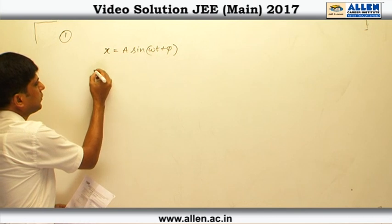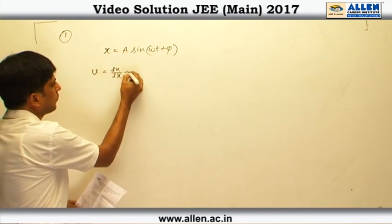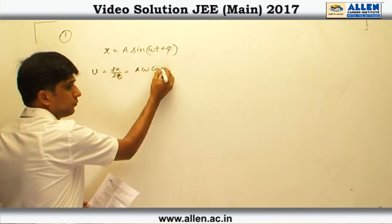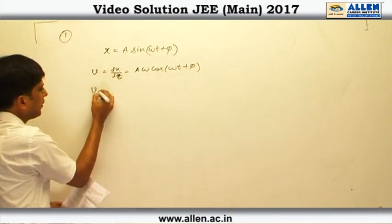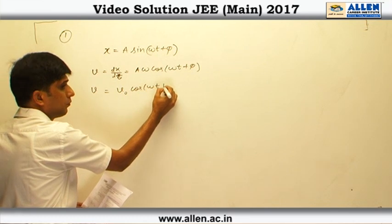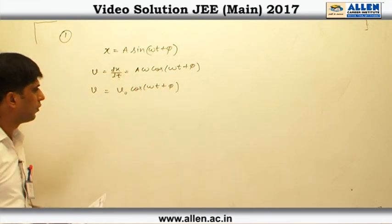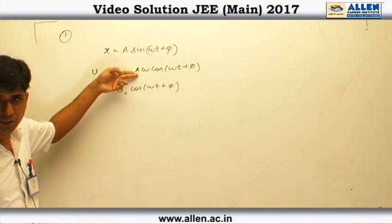Therefore, velocity will be given by A omega cos omega t plus phi, or in other way we can write it as V naught cos omega t plus phi, where V naught is the maximum value of the velocity which must be equal to A omega.